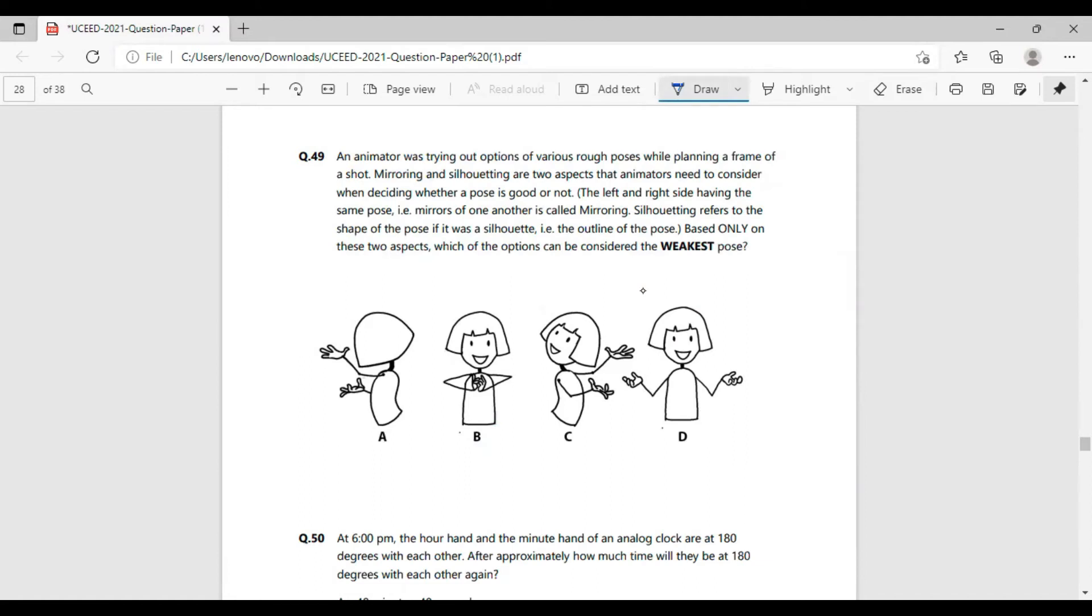In this question, we have to figure out which of these four poses is the weakest when it comes to expressiveness of each and every pose. If we talk about part A, part C and part D, these three parts are quite expressive because they have their hands open and are expressive.